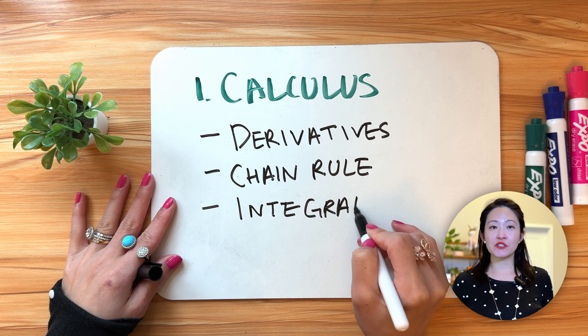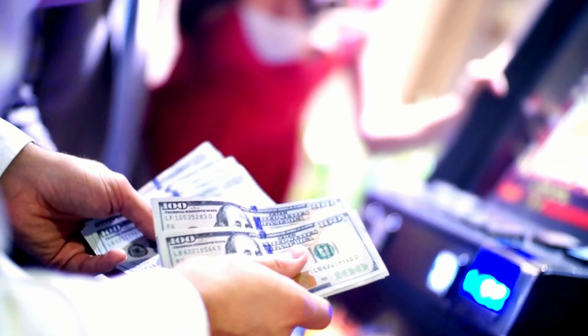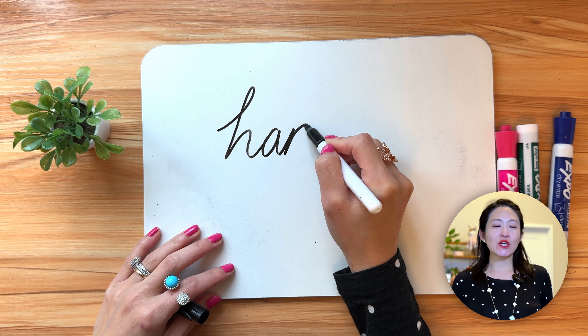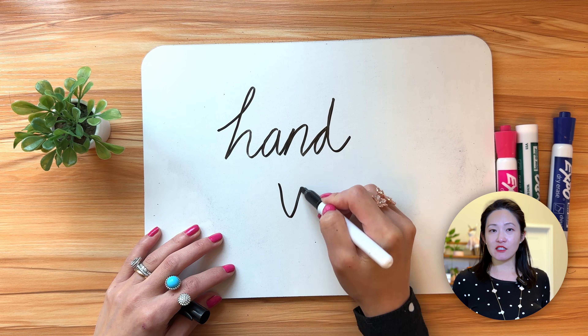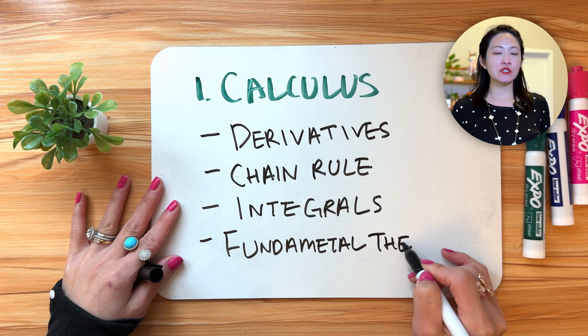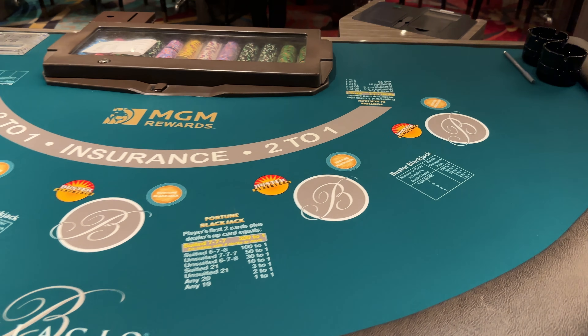Think of integrals like adding up all your casino winnings at the end of the day. Instead of counting each spin separately, an integral helps you calculate the total over time. In AI, we use integrals to understand the big picture. For example, when teaching AI to recognize handwriting, we don't just look at how well it recognizes each letter — we look at the total accuracy over many attempts. The fundamental theorem shows us that derivatives and integrals are actually two sides of the same coin. Imagine you're playing blackjack and tracking your winnings over time.